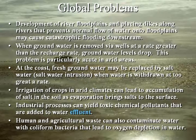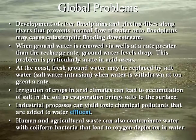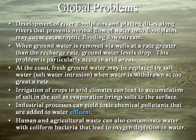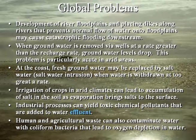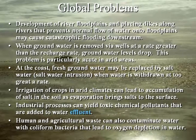Then there are industrial processes which can produce pollutants which can get into our water. The term effluent refers to that stuff that can come out of factories and have a negative impact on water. The whole topic of pollution is one that we will talk about at great length at a later time.